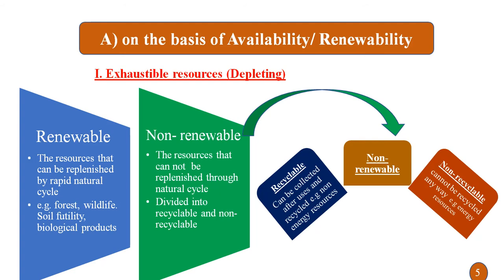The first type is exhaustible resources, meaning these resources are going to be depleted once we use them. Exhaustible resources are divided into renewable and non-renewable. Renewable natural resources are resources that can be replenished by rapid natural cycles or processes. For example, forests, wildlife, soil fertility, and biological products are all resources replenished by natural processes.